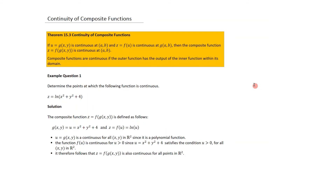Next, we look at the continuity of composite functions. The theorem states: if u = g(x,y) is continuous at (a, b), and z = f(u) is continuous at g(a, b), then the composite function z = f(g(x,y)) is continuous at (a, b). In other words, composite functions are continuous if the outer function has the output of the inner function within its domain.